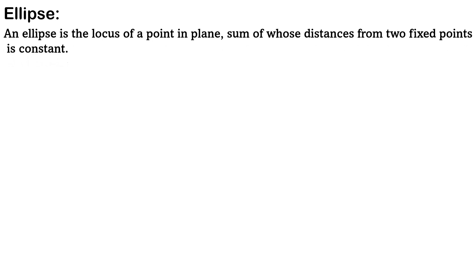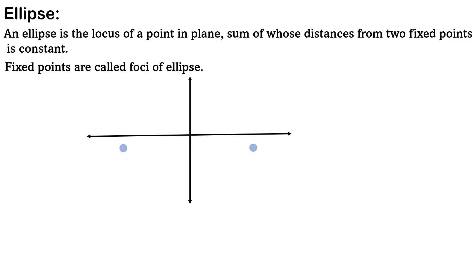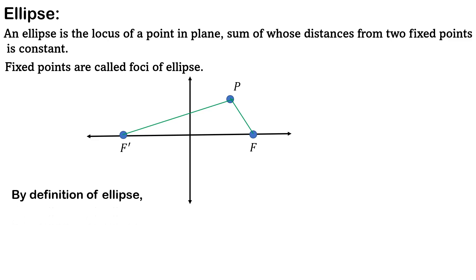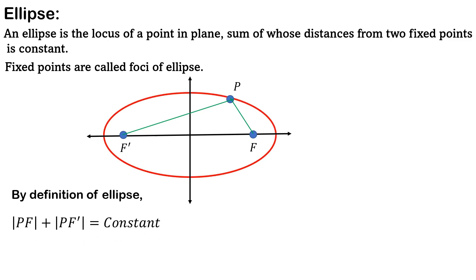Before that, let's go through the definition of the ellipse. An ellipse is the locus of a point in a plane, the sum of whose distances from two fixed points is constant, and these fixed points are called the foci of the ellipse. Let's take foci F and F', and a point P. The distances PF and PF' satisfy: PF plus PF' equals constant.